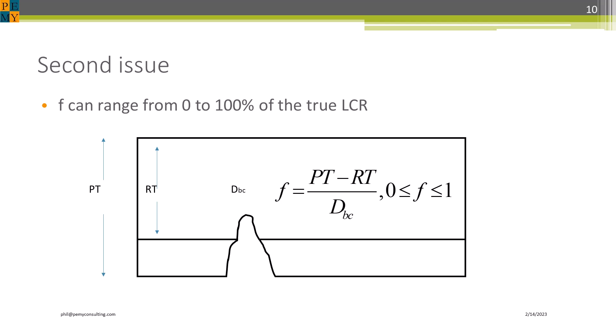In effect, the bottom side pit depth, D sub BC, and hence the bottom side corrosion rate, is scaled down from 0 to 1 times the bottom corrosion rate indicated by the scaling factor F. We show how that is derived in the paper.